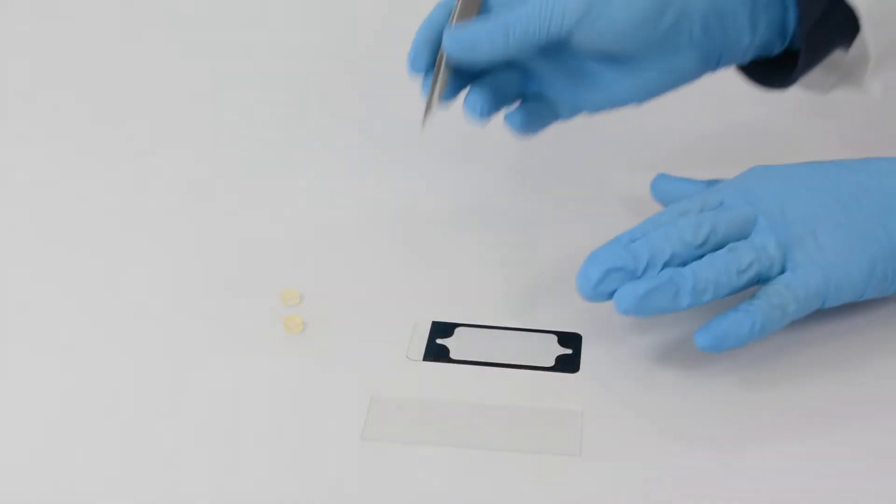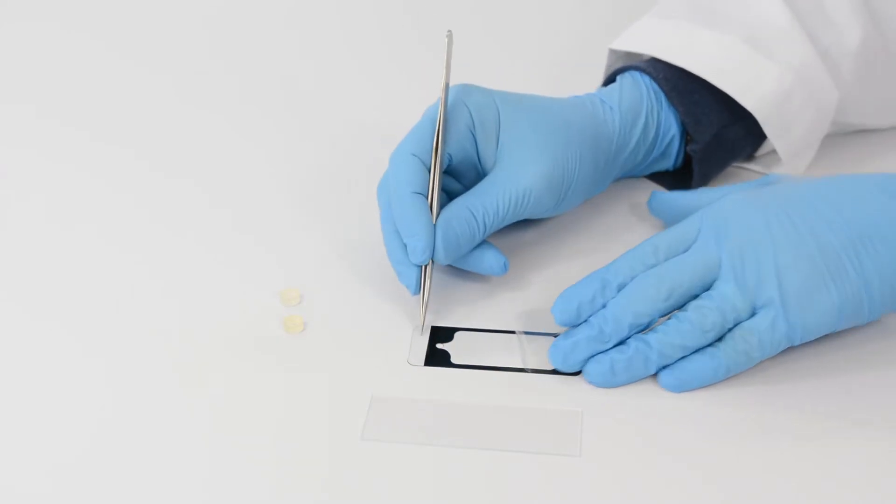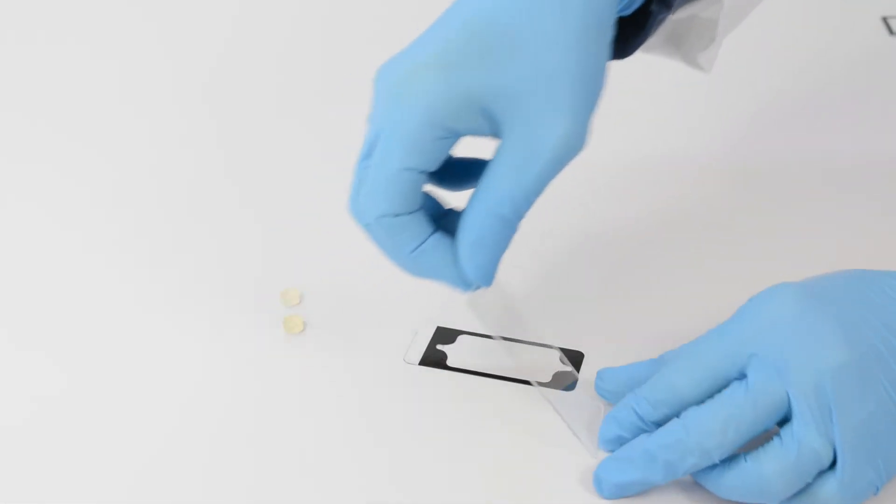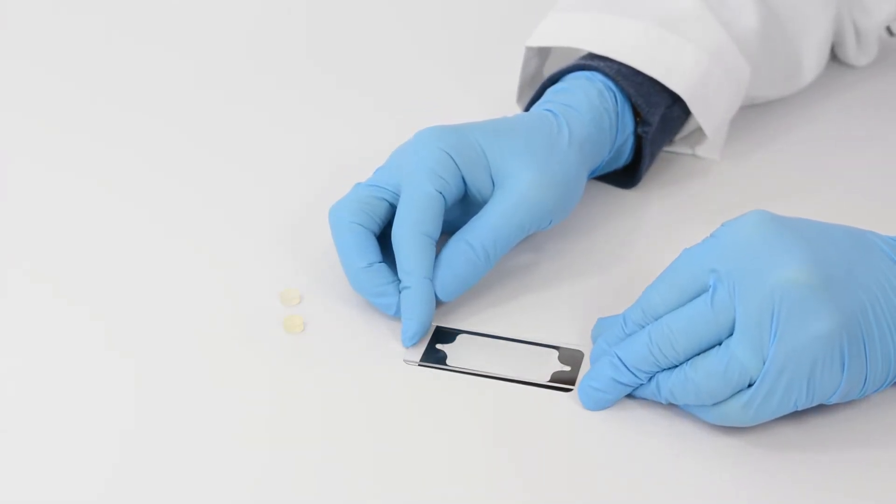Start by removing the liner from the adhesive. With the adhesive side of the chamber facing up, place a slide on top of it and press down.